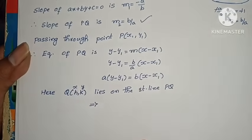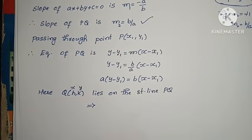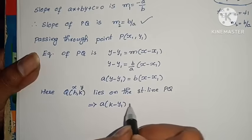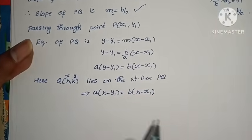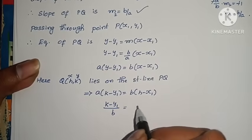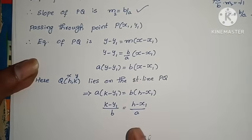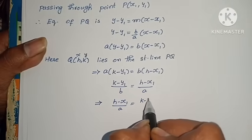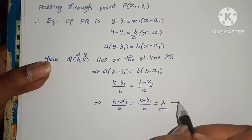Now substitute Q(h, k) — since Q is a point on PQ, it satisfies the equation. So a into (k minus y₁) equals b into (h minus x₁). Dividing both sides: (k minus y₁) by b equals (h minus x₁) by a. That implies (h minus x₁) by a equals (k minus y₁) by b equals lambda. Let this be equation 1.